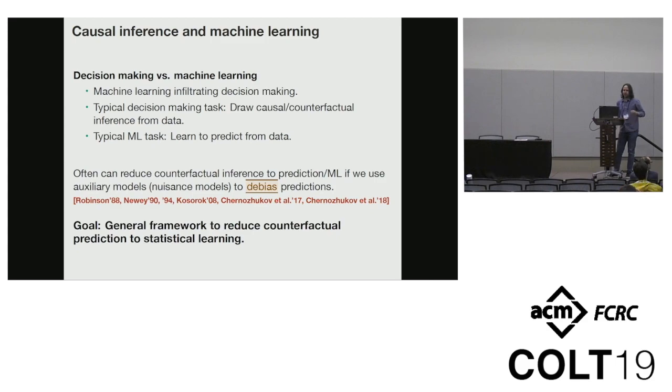So the goal of this work is to unify all these efforts under the blanket of statistical learning, and give general tools for using statistical learning to solve counterfactual inference problems. The key tool we're going to use is nuisance parameters - the idea of using nuisance parameters to debias our predictions.